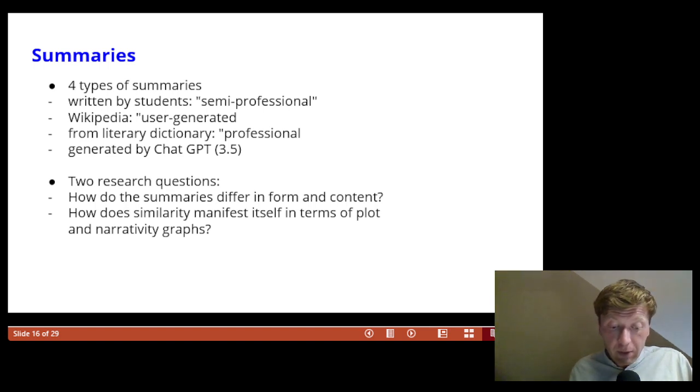user-generated summaries from the online encyclopedia Wikipedia. And fourth, summaries of the text generated by the ChatGPT language model. And it should be noted that we used version 3.5 of ChatGPT, according to various studies, has lower performance than ChatGPT 4.